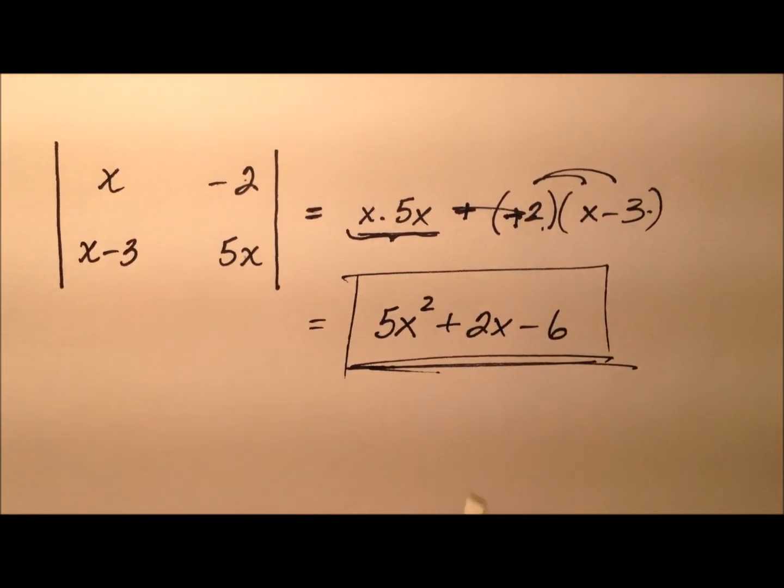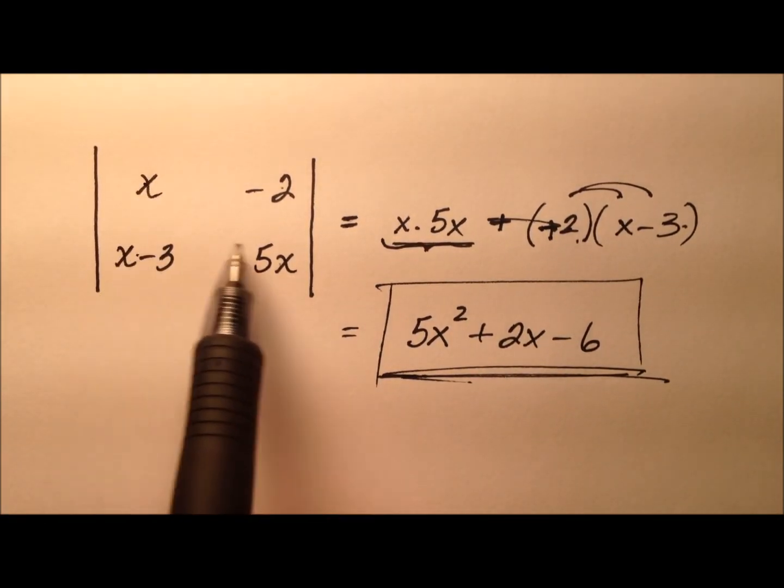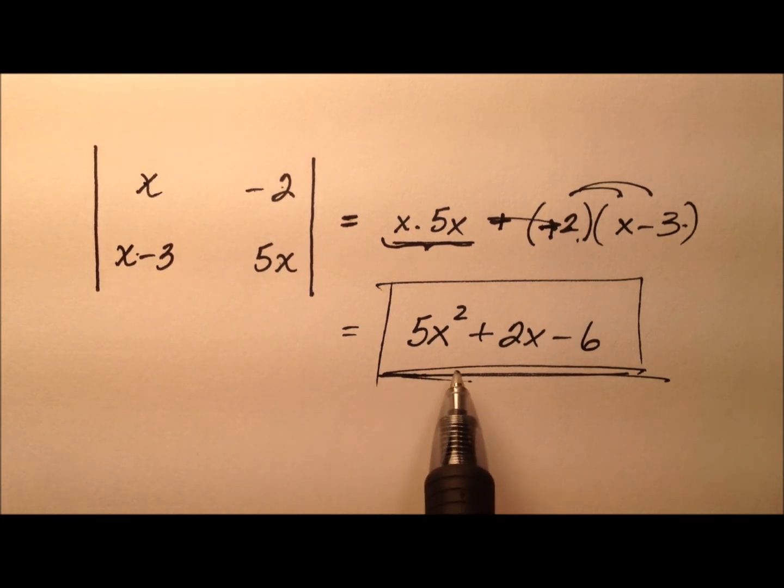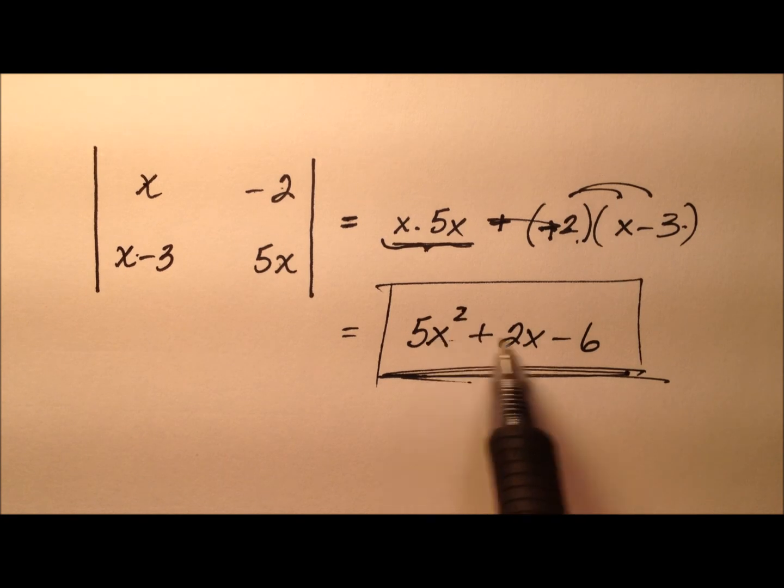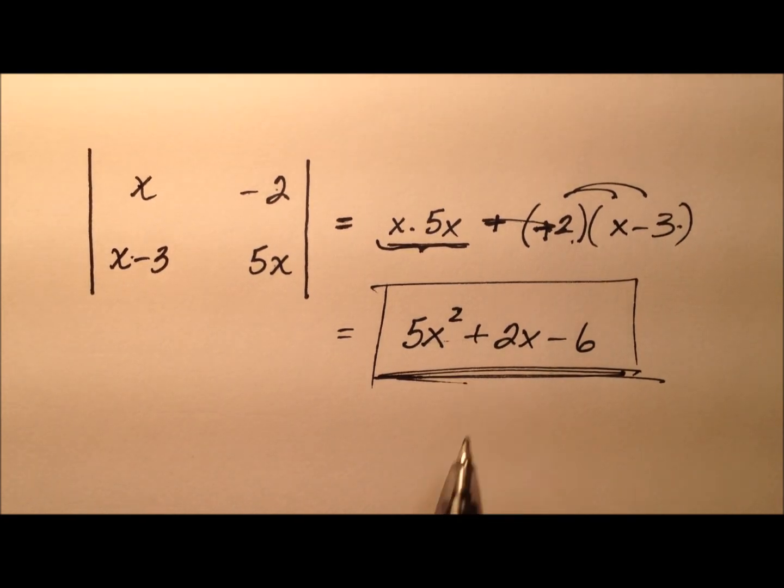We don't exactly have numbers, that's okay, we have some variables in here instead. When we found this determinant, it came out to be this nice quadratic trinomial expression, 5x squared plus 2x minus 6.